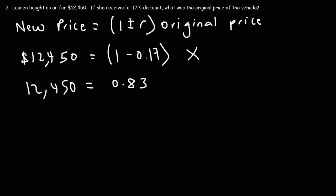1 minus 0.17 is 0.83. So if you take off 17% from 100%, then that means that the new price is 83% of the original price.